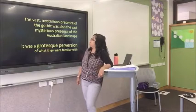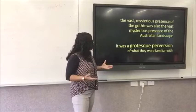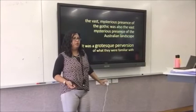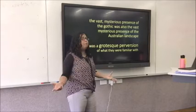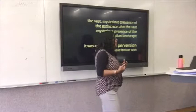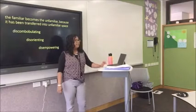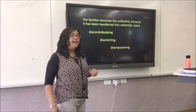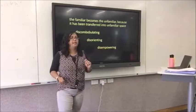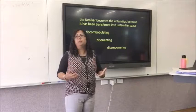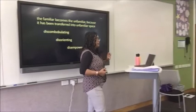The vast, mysterious presence of the Gothic was also the vast, mysterious presence of the Australian landscape. It was a grotesque perversion of what they were familiar with — and the grotesque and the perverted are both elements of the Gothic genre. What was familiar — a tree, a swan — was in a very unfamiliar landscape and setting, and that unsettled them. What was familiar had become unfamiliar because it had been transformed into an unfamiliar space. And so Australian Gothic literature is very often used as a post-colonial comment. Inside the Island is a post-colonial text, and it uses the Gothic genre to make a comment about colonization.